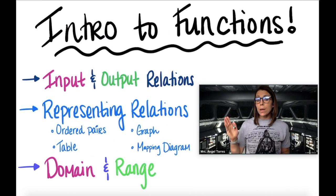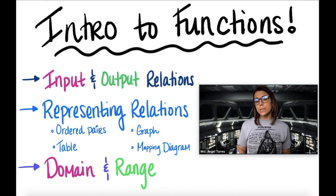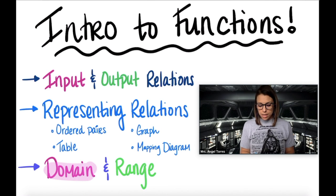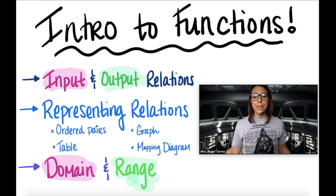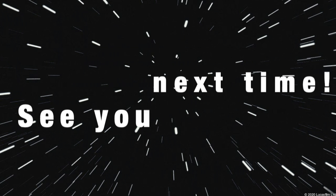So just to recap: a relation is how each input is matched or related to a specific output. There were four different representations we went over. And whenever you are asked to identify the domain and range, just remember — the domain is simply your set of inputs, and the range is simply your set of outputs. That's it for today's lesson. I will see you next time. Bye.